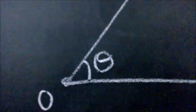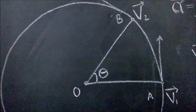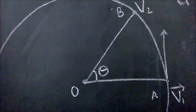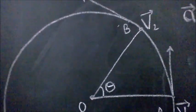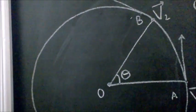Now, let's say that when the ball moves from A to B, it covers an angular distance of theta. Now, let us try to find the angle between the two vector arrows.